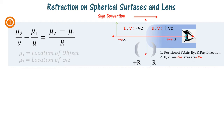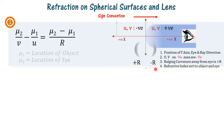Third, regarding the radius of curvature: if it is bulging away from the eye, its value is taken as plus R; if it is bulging towards the eye, the value is taken as minus R. Fourth, the refractive index of the medium where the object is placed is taken as mu 1, and where the eye is placed is taken as mu 2. These are very important concepts — please remember them.